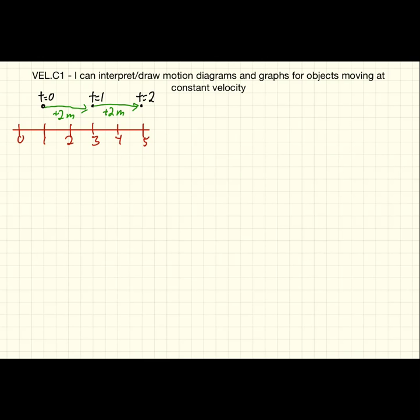I can add to my motion diagram the velocity. We saw that the velocity is the change in position divided by the time that it took. And to get the time that it took, I just look at the values of the times there. And I've set this up so that the change in time between each successive point is 1 second.